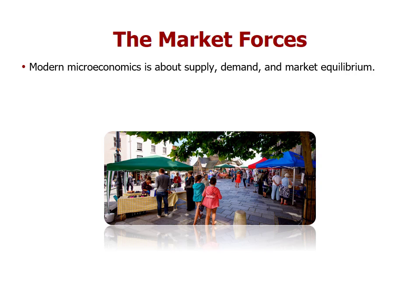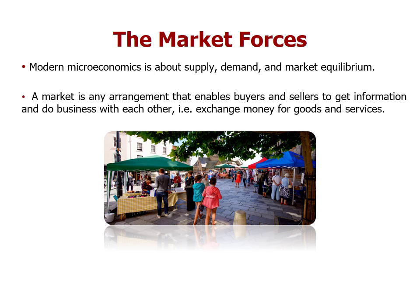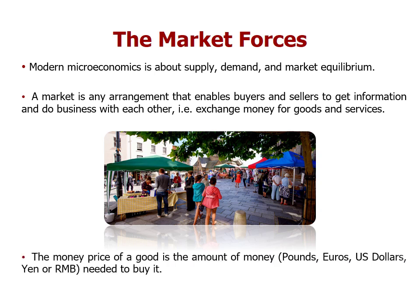Modern microeconomics is very concerned with supply, demand, and market equilibrium. A market is any arrangement that enables buyers and sellers to get information and do business with each other — anywhere buyers and sellers can exchange money for goods and services. That includes Tesco, Sainsbury's, Audi, farmers markets, fish markets, wholesale markets, and online marketplaces like Amazon and eBay. The money price of a good is the amount in pounds, euros, dollars, yen, or RMB needed to buy that product.